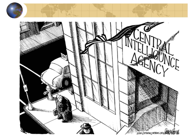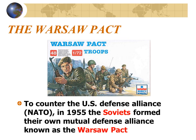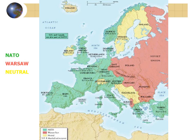A cartoon makes fun of the Central Intelligence Agency — look carefully at the name 'Central Intelligence Agency' to see the joke. To counter U.S. aggression against countries around the world, in 1955 the Soviet Union formed its own mutual defense alliance known as the Warsaw Pact. A map shows the countries in red forming the Warsaw Pact, while the countries in green formed the NATO alliance.